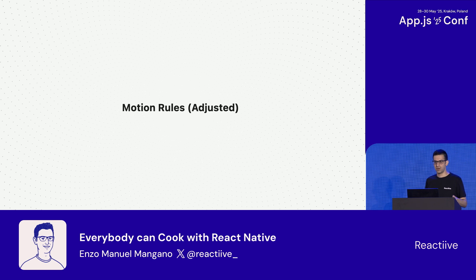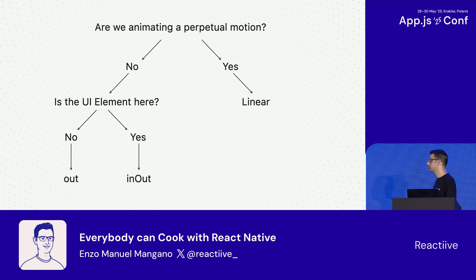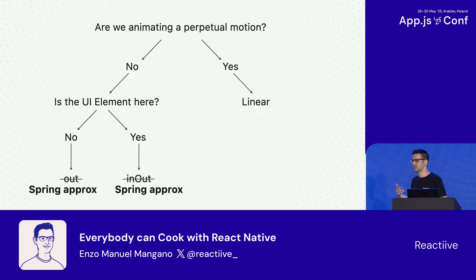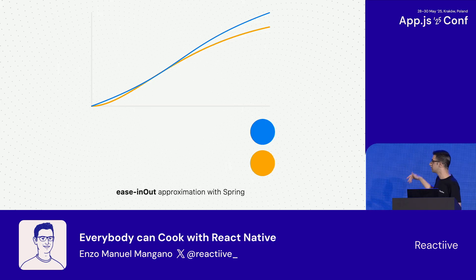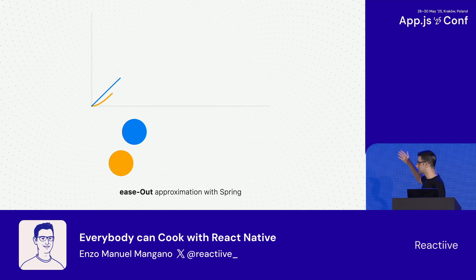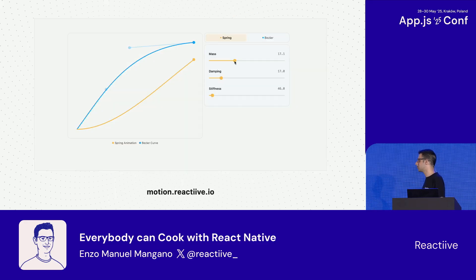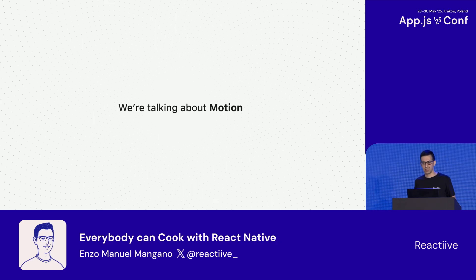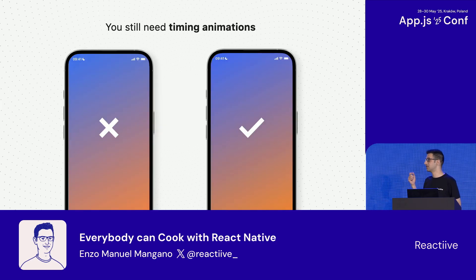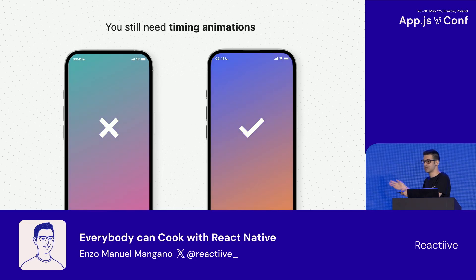We don't have to throw away what we learned previously. We can still try to use the motion rules, but just adjust them. Instead of using ease out and ease in-out, we can use spring approximation. The concept feels a bit abstract, but it's easy to visualize — for instance, the second animation here is a spring approximation of the ease out. I created a small website at motion.reactive.io. It is open source, created with Expo, works on web, iOS, and Android, and is powered by Reanimated and Skia. Timing animations are still super relevant — especially for animating opacity or background color — because you want to animate colors evenly, so it makes sense to use linear easing.